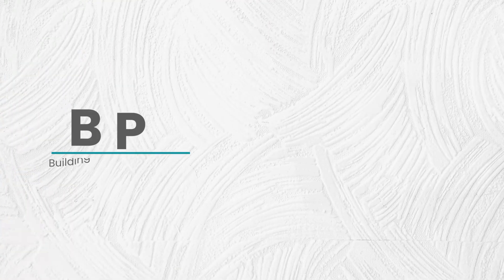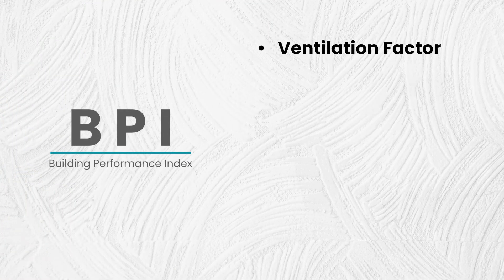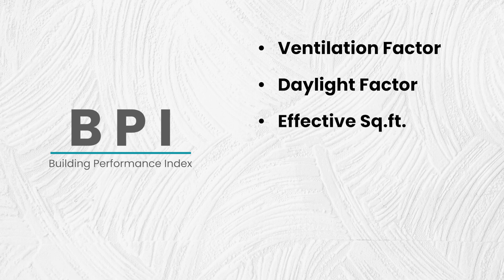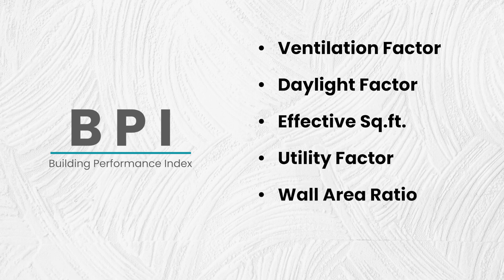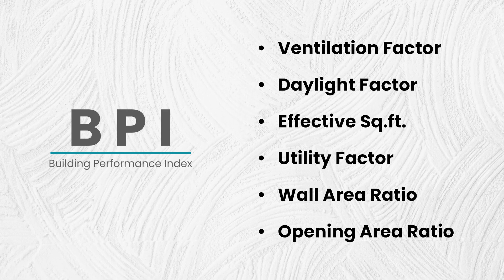The six indicators used are ventilation factor, daylight factor, effective square feet, utility factor, wall area ratio and opening area ratio.